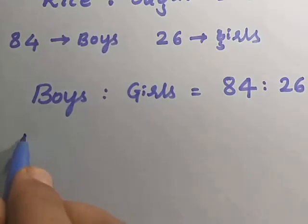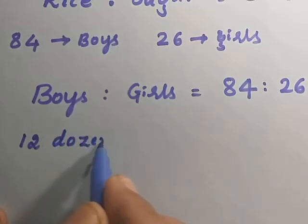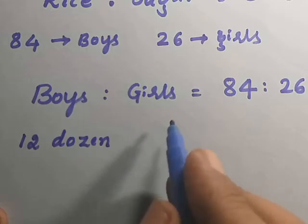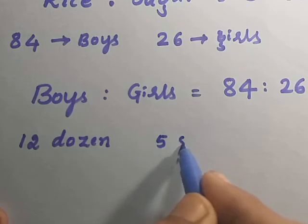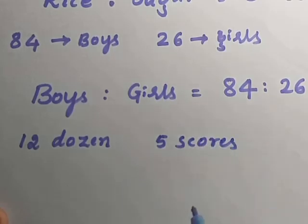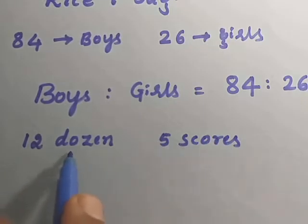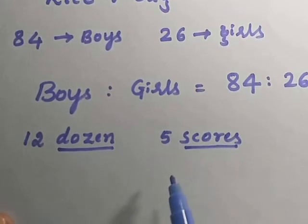Similarly, 12 dozen and 5 scores. 12 dozen of articles and 5 scores of articles. Here what needs to be done is, what is a dozen, what is a score. If this is understood, then the comparison is possible.